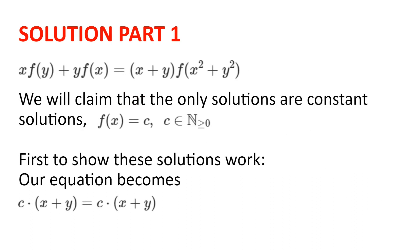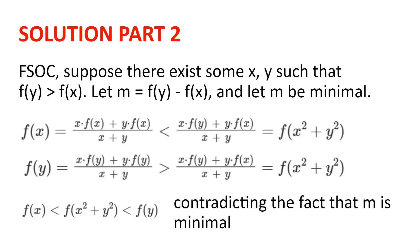Now we will show that these are the only solutions to the functional equation. For the sake of contradiction, suppose there exists some x and y such that f of y is greater than f of x. Let m equal to f of y minus f of x and let m be minimal, so take the smallest positive integer m for which there exists x and y satisfying m equal to f of y minus f of x. Then we can rewrite f of x as x plus y multiplied by f of x divided by x plus y, which, since f of x is less than f of y, is less than x times f of y plus y times f of x divided by x plus y, which is equal to f of x squared plus y squared.